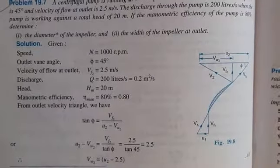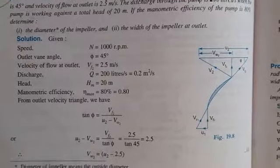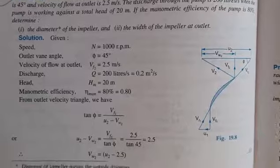If the manometric efficiency of pump is 80 percent, determine the diameter of the impeller and second, width of the impeller at outlet.